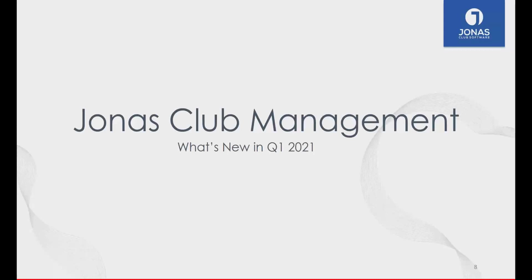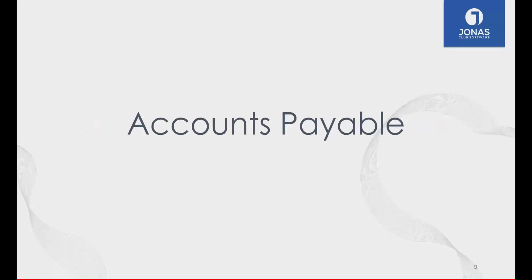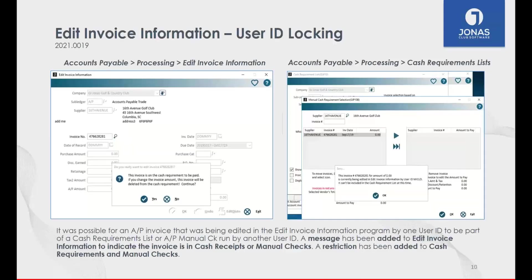Let's get to the good stuff — what's new in Jonas Club Management. We're kicking off with accounts payable. The first enhancement has to do with editing invoice information. In the past few years we've put in several programs to help edit information once it's been posted in payables. The edit invoice information screen is typically used to edit things like the due date, the GL distribution, or the amount to pay.